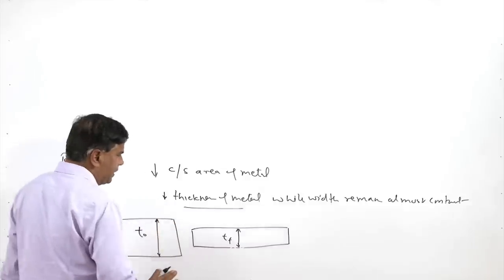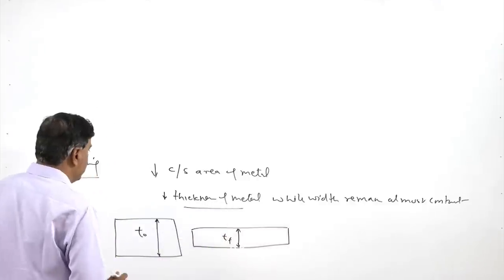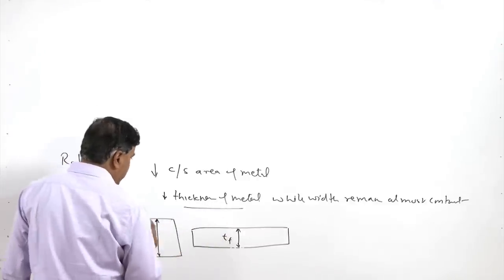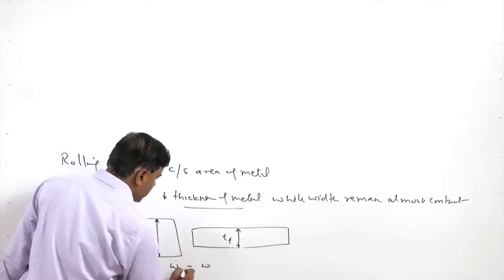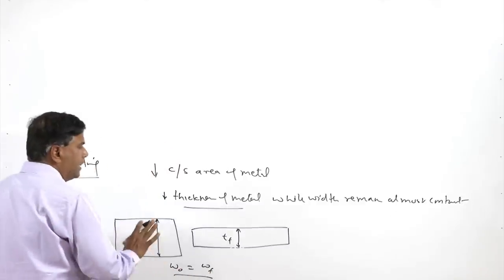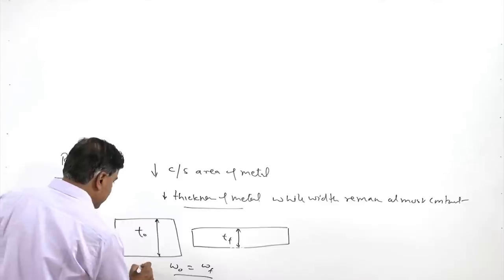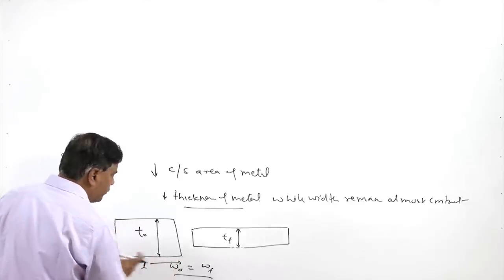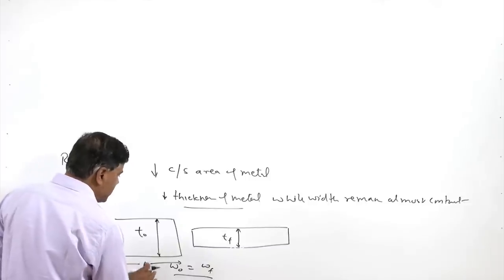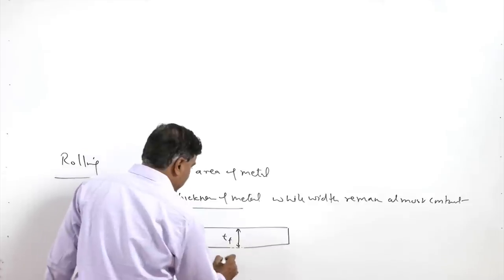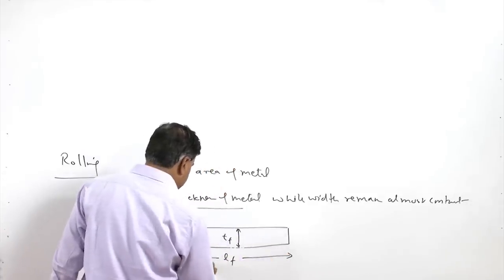T0 is the initial plate thickness and Tf is the final plate thickness achieved after rolling. Whenever rolling is carried out, the width W remains almost constant — W0 and Wf in both cases remain constant — but there is a significant increase in length. L0 is the initial length and Lf will be significantly greater than L0.